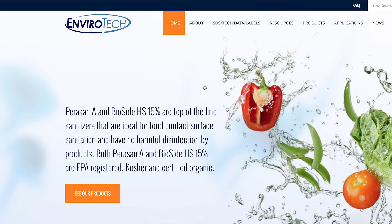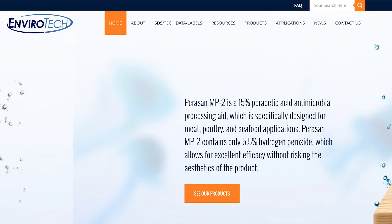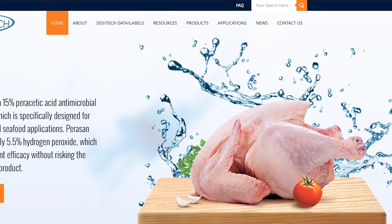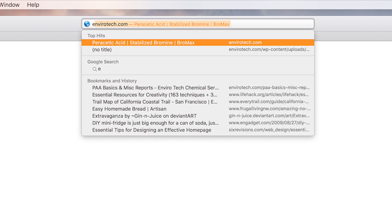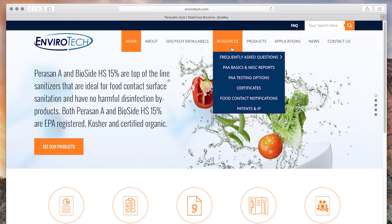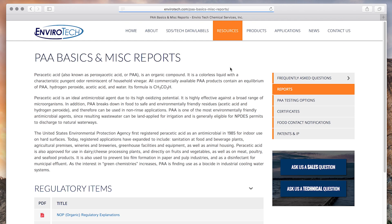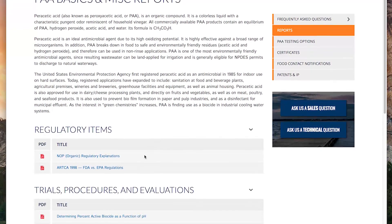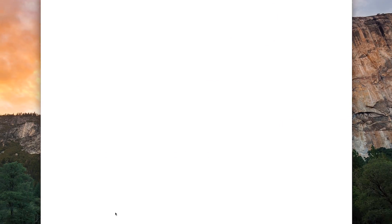To access a report on the relative compatibility of many piping materials and elastomers for use in PAA service, go to the Resources section, PAA Basics, and find the report titled Peracetic Acid Material Compatibility.